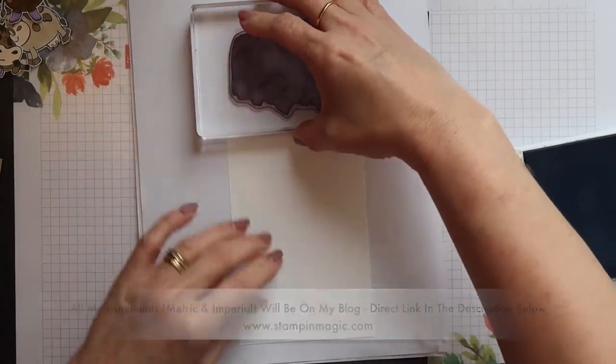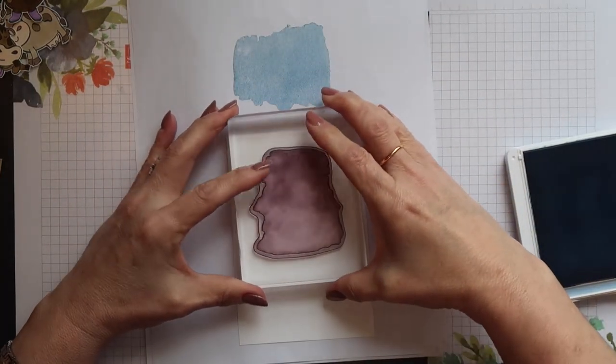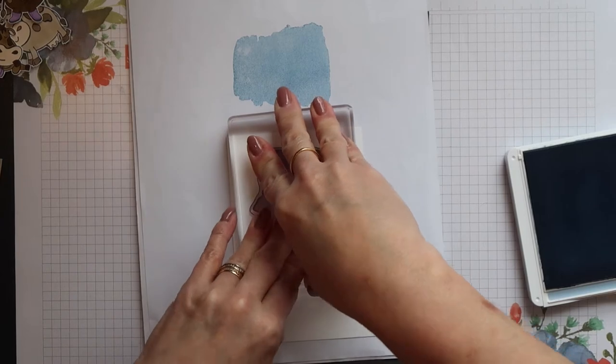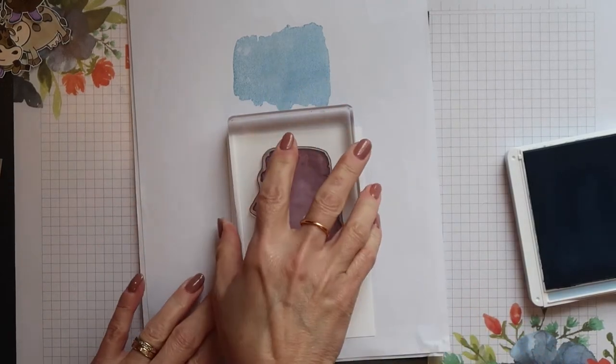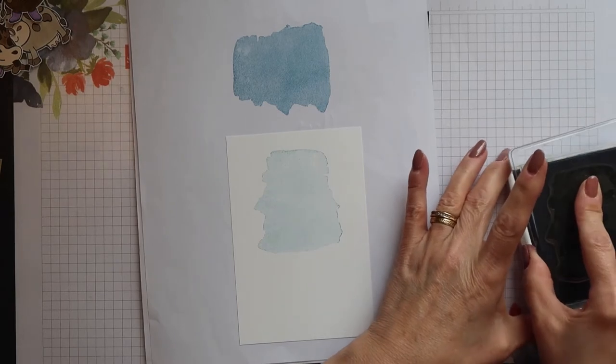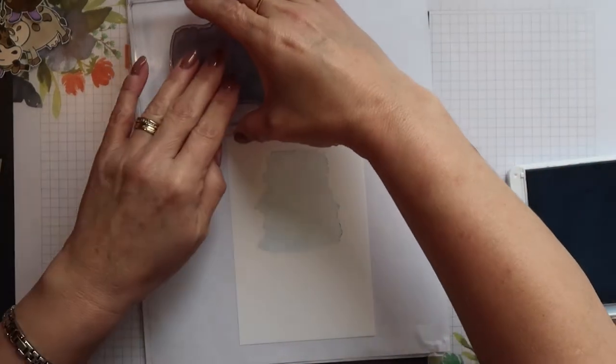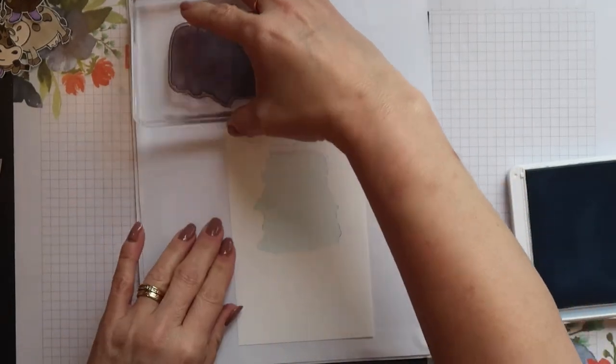So I'm inking up my stamp and then I'm going to stamp off once before stamping onto my Whisper White layer. And then I'll ink it up again, stamp it off again, and then stamp onto my card.